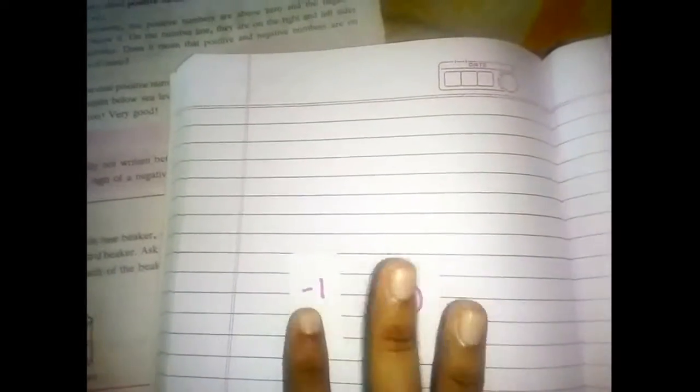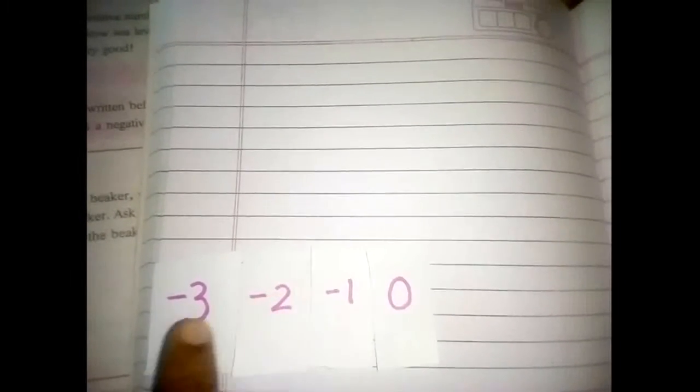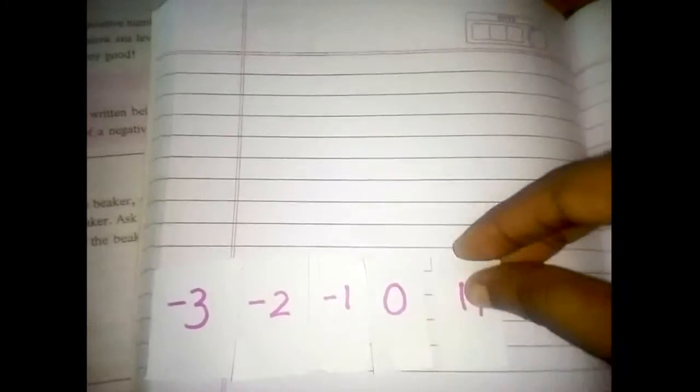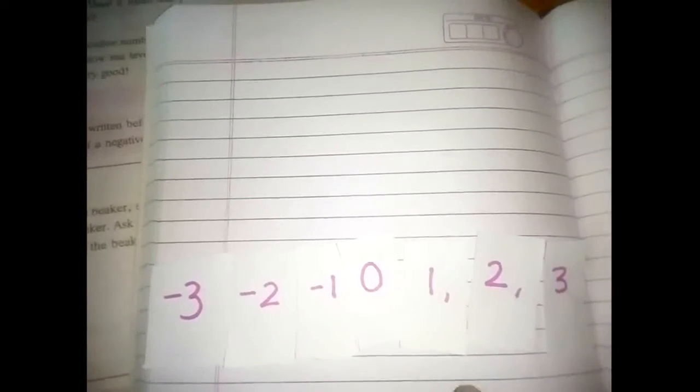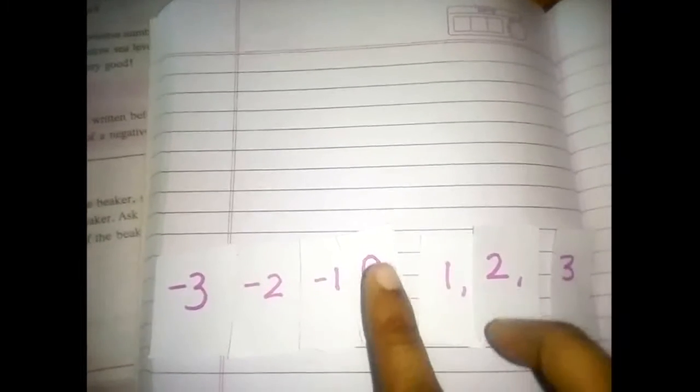Numbers on the left side of 0 are all negative numbers: minus 1, minus 2, minus 3. These are called negative numbers. Numbers on the right side of 0 are positive numbers: plus 1, plus 2, plus 3. Before a number, if no sign is given, that means it is positive — the meaning is plus.